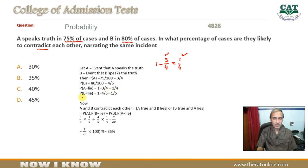Isi tarike se B jab lie ke case hai toh woh aayega 1 minus 4 by 5. Kyun ke agar woh 4 by 5 time sach bolta hai toh 1 minus 4 by 5 time, yaani ke 1 by 5 time woh jhoot bolta hai.